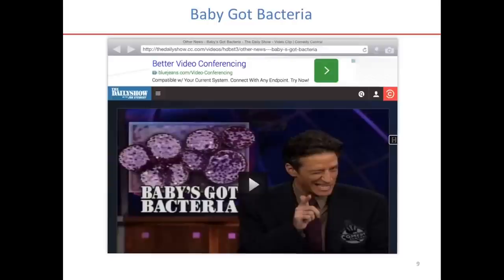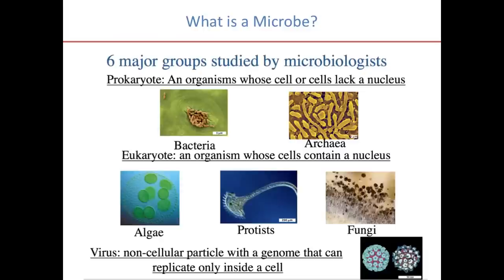There are six major groups of microbes studied by microbiologists, divided into three categories: prokaryotes, eukaryotes, and viruses. A prokaryote is an organism whose cell or cells lack a nucleus. Those are filed under the categories of bacteria and archaea.